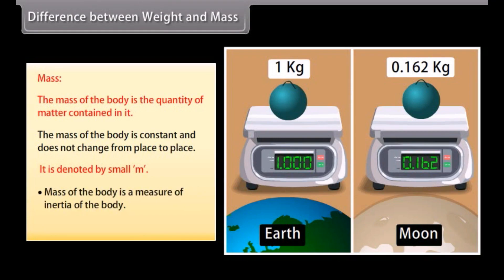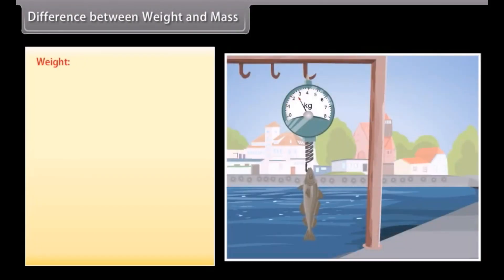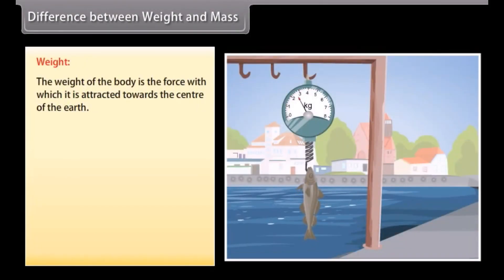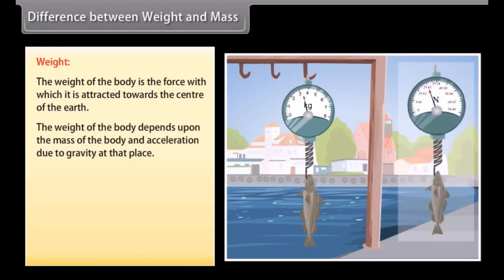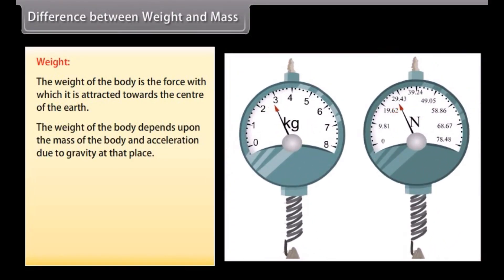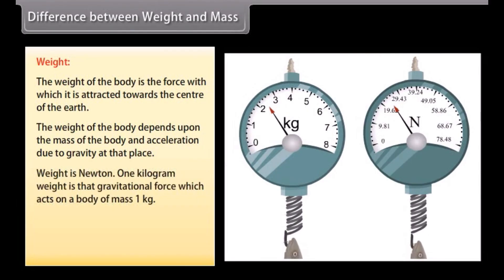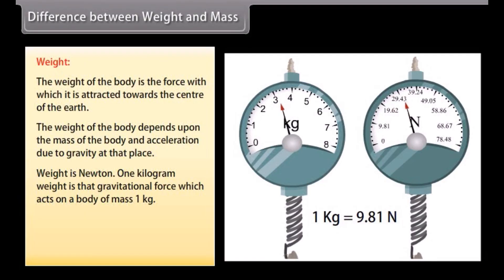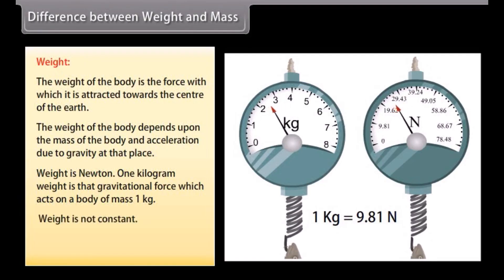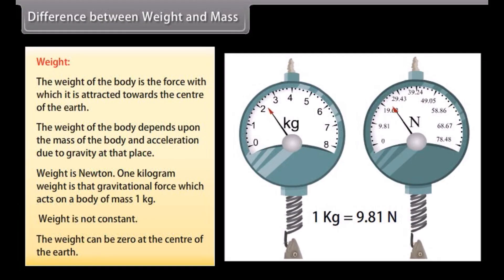Difference between weight and mass. Mass is a measure of the inertia of the body; mass cannot be zero. Weight is the force with which a body is attracted towards the center of the earth. The weight of a body depends upon its mass and acceleration due to gravity at that place. The SI unit of weight is Newton. One kilogram-weight is the gravitational force acting on a body of mass one kilogram. Weight is not constant and can be zero at the center of the earth.